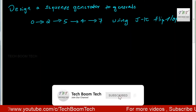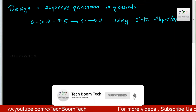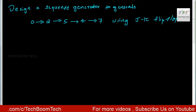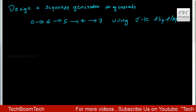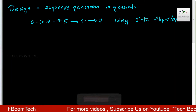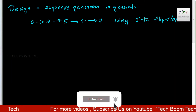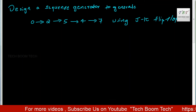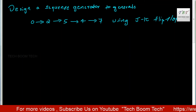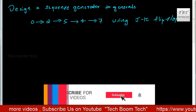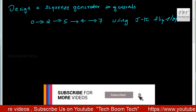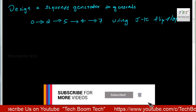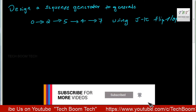Hi all, in this video we are going to discuss this problem: design a sequence generator to generate the 0, 2, 5, 4, 7 sequence using JK flip-flops. We have a counting sequence and we will generate this sequence.